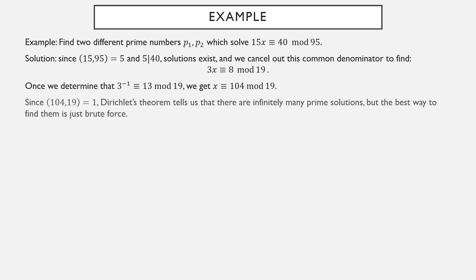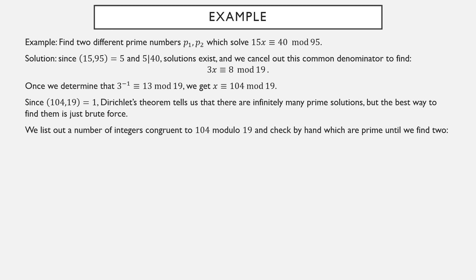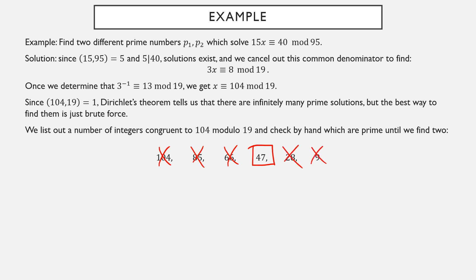Since there are infinitely many primes satisfying x ≡ 104 mod 19, the best way to find them is to brute force it. We list integers congruent to 104 mod 19 and check which ones are prime. 104 is not prime — it's divisible by 2. Subtracting 19: 85 is a multiple of 5. Subtracting 19: 66 is even. Subtracting 19: 47, which is actually prime. Continuing: 28 is even, 9 is 3 times 3, and subtracting 19 again would give negatives, which aren't prime. So going down from 104, we found only one prime: 47.